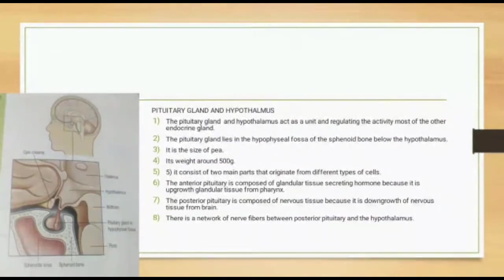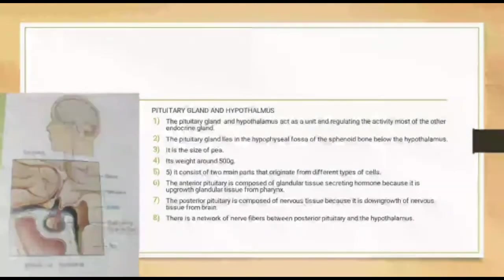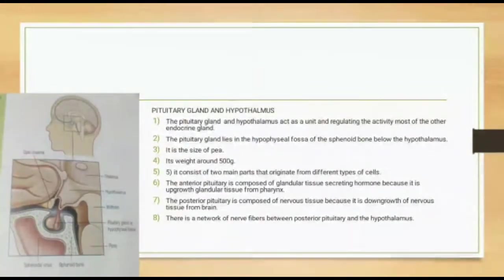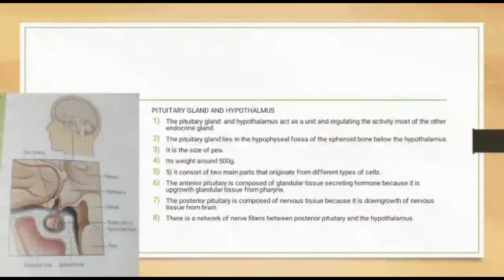The pituitary gland lies in the hypophysial fossa of the sphenoid bone, below the hypothalamus. It is approximately the size of a pea, and its weight is around 500 milligrams. It consists of two main parts that originate from different types of cells.